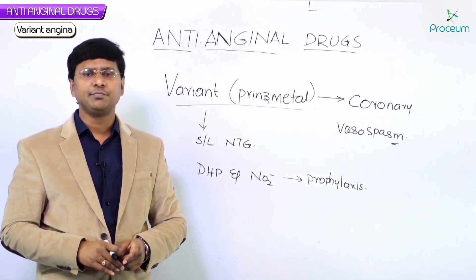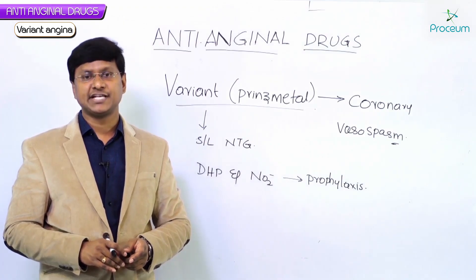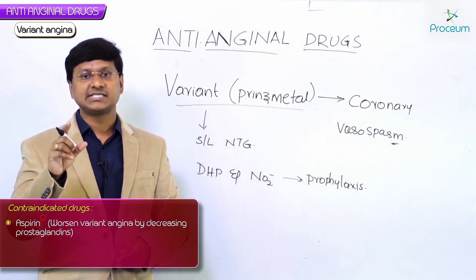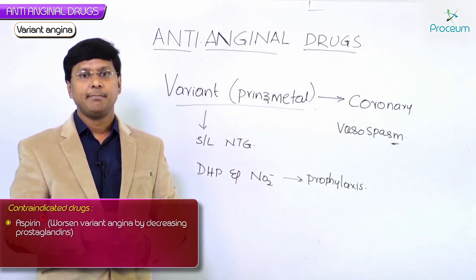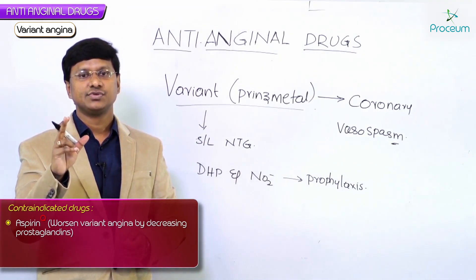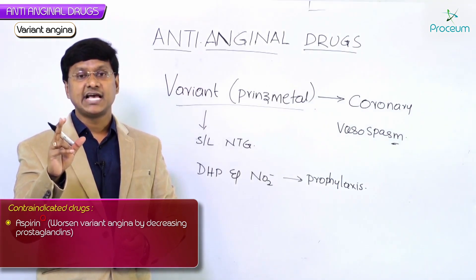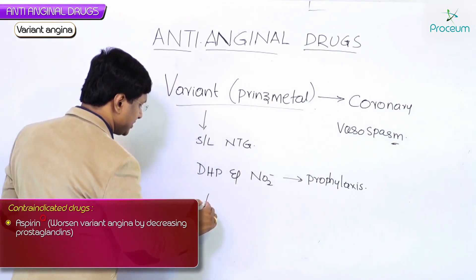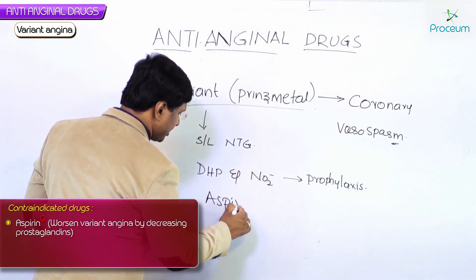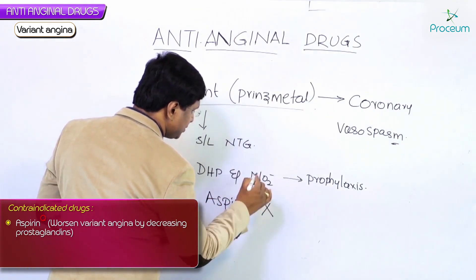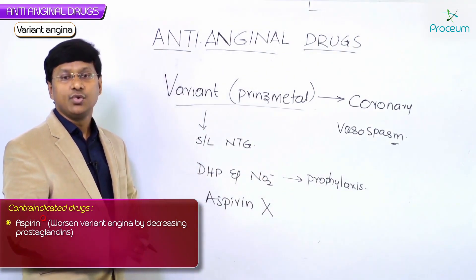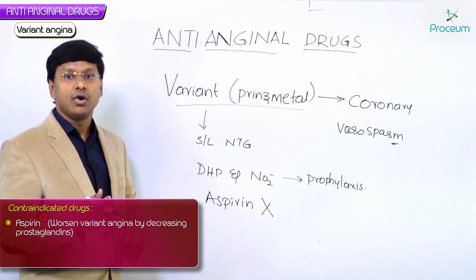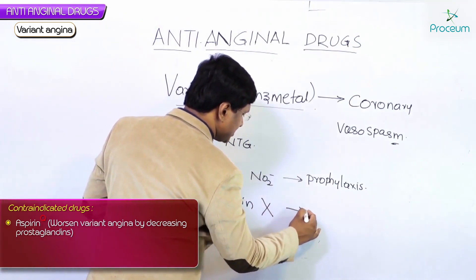Now one important point — aspirin can worsen variant angina by decreasing prostaglandin synthesis. That is the reason why aspirin should not be given in patients with variant angina. Why should aspirin not be given? It will worsen the variant angina by decreasing the prostaglandin synthesis.